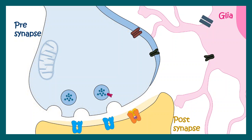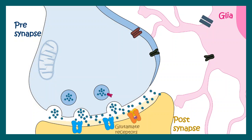Presynaptic action potentials reach the synaptic terminal, which leads to the release of glutamate into the synaptic cleft. This glutamate would bind to the glutamate receptors present in the postsynapse. The question is: where does glutamate come from?